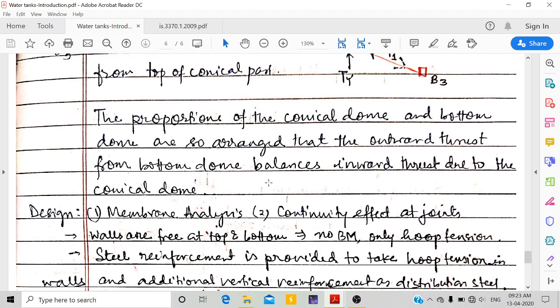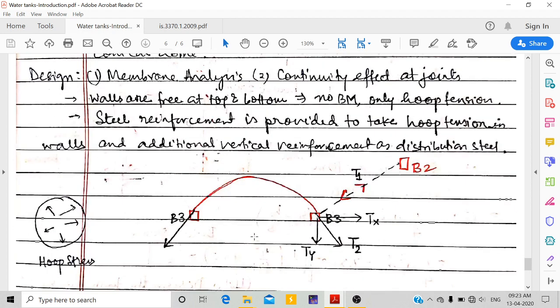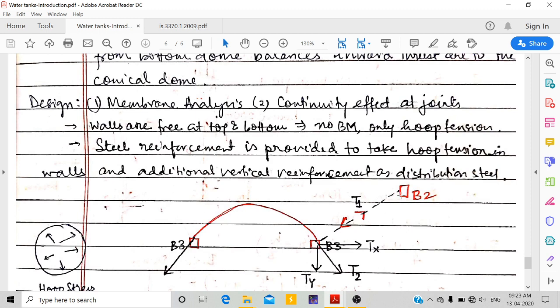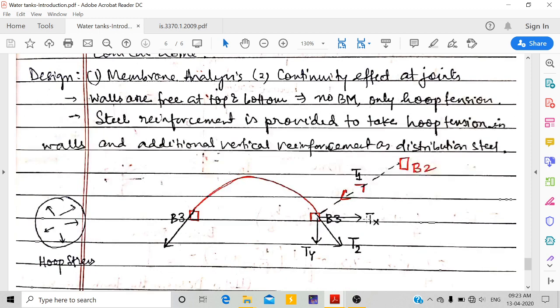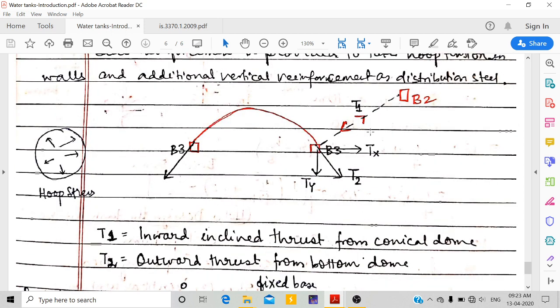The proportion of conical dome and bottom dome are so arranged that the outward thrust from bottom dome balances the inward thrust due to conical dome. This is the bottom dome, and this is the conical slab. From here T1 is the inward thrust, and T2 is the outward thrust. So this will balance.